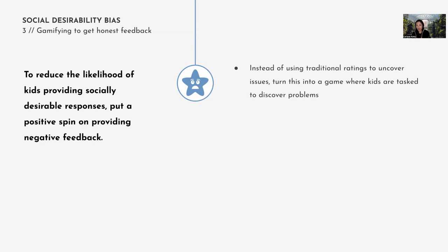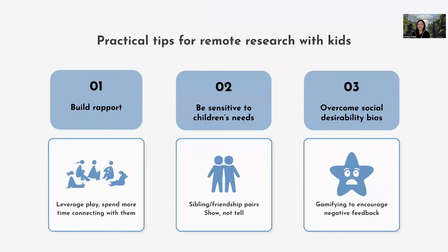Another way is to gamify the session to get more honest feedback. Instead of using traditional rating scales like 'on a scale of one to five, how do you like this,' turn it into a game. Tell the kid, 'My task for you today is to look for things that are wrong with this.' When you turn it into a game where they're supposed to find problems with the app, they're more likely to be honest and give negative feedback. As a recap, the top three tips are: building rapport with kids, being sensitive to their needs, and gamifying to encourage kids to be more open and honest in a session.